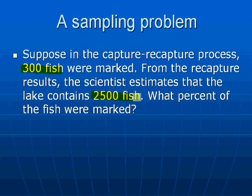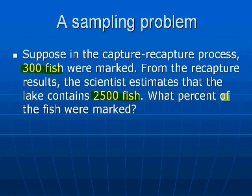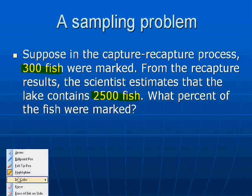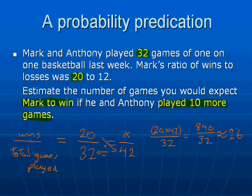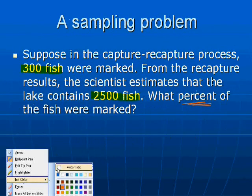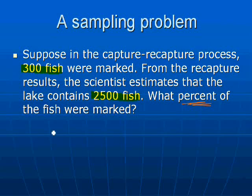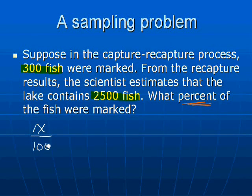We're trying to find a percentage. This question is a little bit complicated. A percent is the same as a fraction over 100. So we have x over 100 — that's our percent. 100% of the population: scientists estimate the lake contains 2,500 fish, so that would be 100% of our population.